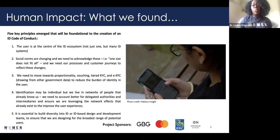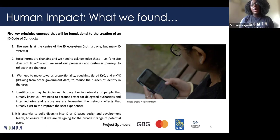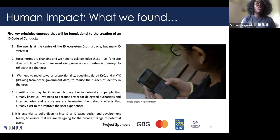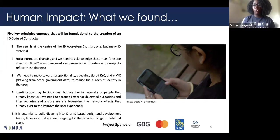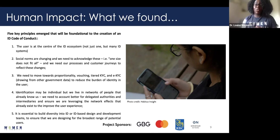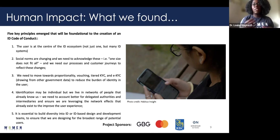The third principle is a move towards proportionality — things like vouching, tiered KYC, and electronic KYC — making sure we leverage the technology and data we have to reduce the burden of identity on the end user. One thing that was striking from all the interviews was that the burden of proof is always on the end user. We have so much capability and technology that means we could actually reduce that burden if we wanted to. We should be making it easier for people, giving them alternative routes for verifying their identity, and using the data we have to do more of the heavy lifting.